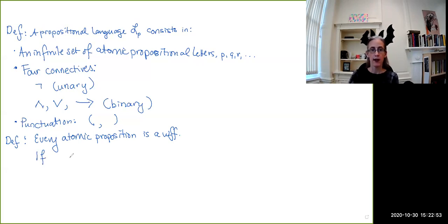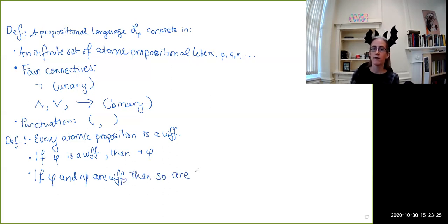Then we have that if phi and psi is a well-formed formula, then so is phi with the addition of this little line with this unary operator in front of it. So then we have that if phi and psi are well-formed formulas, then so are the following: phi upside down v psi, phi ordinary v psi, and phi right arrow psi.